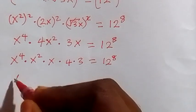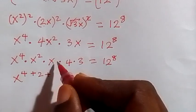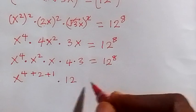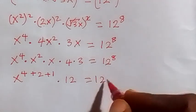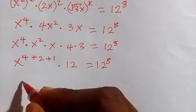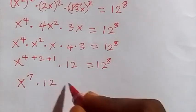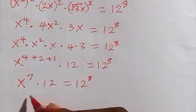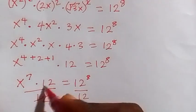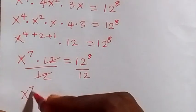From here we have the same base multiplied, so by the law of indices this gives us x raised to the power 4 plus 2 plus 1, times 4 times 3 which is 12, equals 12 raised to the power 8. Combining the powers gives x raised to the power 7 times 12, equals 12 raised to the power 8. Dividing both sides by 12, the 12s cancel, leaving x raised to the power 7.